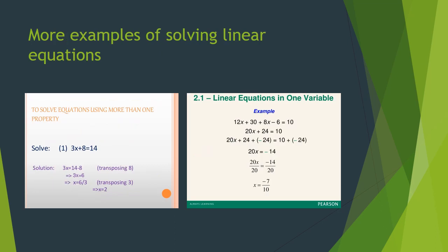More examples of solving linear equations. Example 1: 3x plus 8 equals 14. Transposing 8: 3x equals 14 minus 8, so 3x equals 6. Transposing 3: x equals 6 upon 3, so x equals 2. Example 2: 12x plus 30 plus 8x minus 6 equals 10. Simplifying: 20x plus 24 equals 10. Subtracting 24 from both sides: 20x equals minus 14. Dividing both sides by 20: x equals minus 7 upon 10.